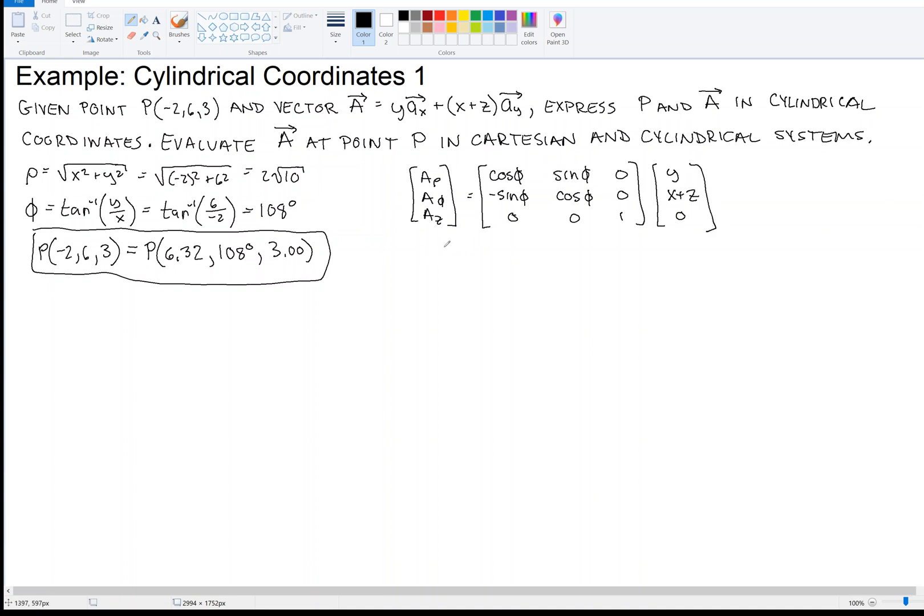So I carry that multiplication out, and I get A_ρ is equal to y cos φ + (x + z) sin φ. And I get A_φ is -y sin φ + (x + z) cos φ. And then A_z is just 0 again. There's 0 in the z direction in Cartesian, and there's 0 in the z direction in cylindrical.